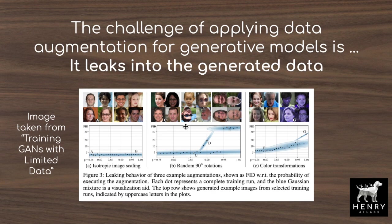The generative model is learning P of X — the distribution of the data. As you start to apply P of T of X, T being the transformation, the generative model doesn't know this and won't be able to invert the true P of X, so it will start producing augmented data. From training GANs with limited data, they show that if you rotate the images, the GAN produces rotated images as well, and if you apply a blue histogram shift, the generator produces blue images.